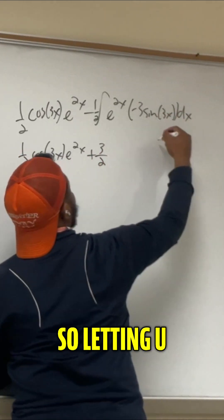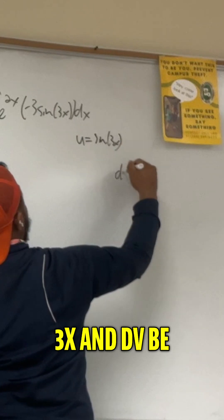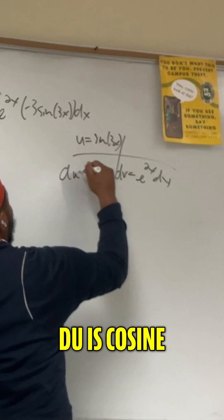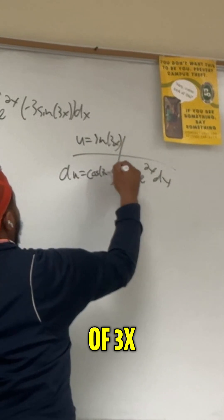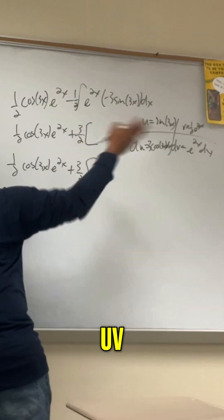And now we'll use LIATE again, right? So letting u equal sine of 3x and dv be the rest. du is cosine of 3x dx times 3, and then v would be half e to the 2x.